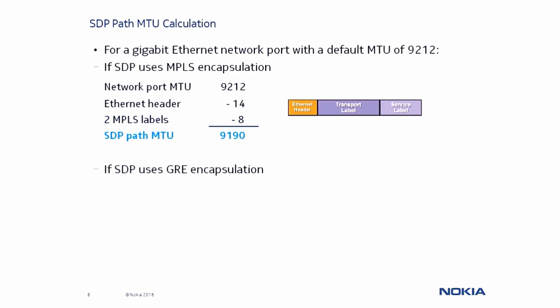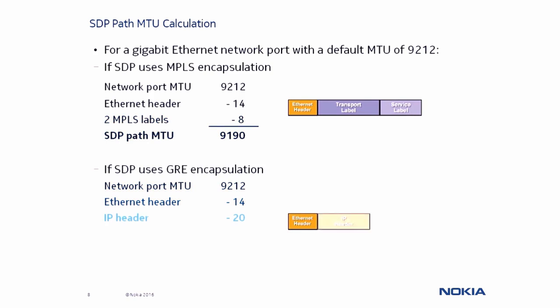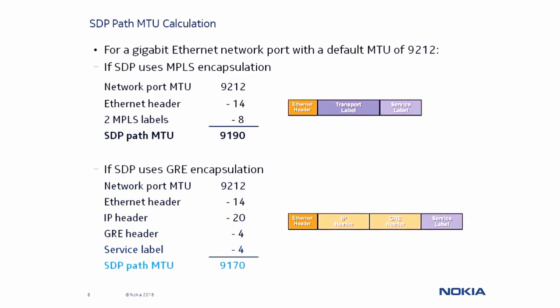For GRE encapsulation, we again take the 9212 bytes, subtract 14 bytes for the Ethernet header, subtract 20 bytes for the IP header, subtract 4 bytes for the GRE header, and another 4 bytes for the service label, to give us an SDP Path MTU of 9170 bytes.